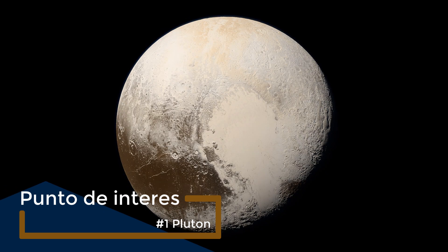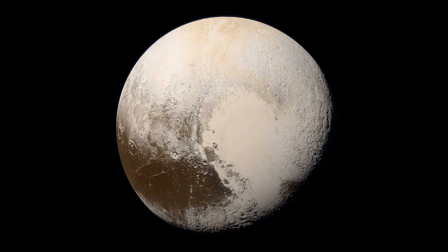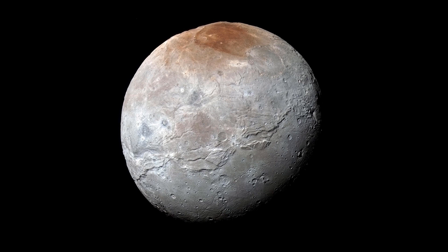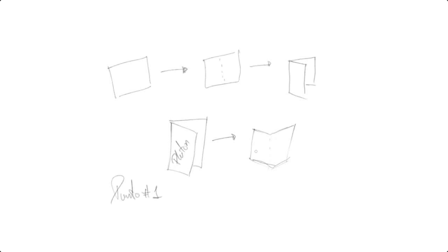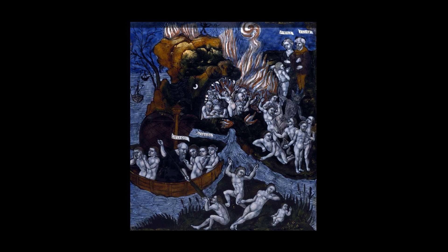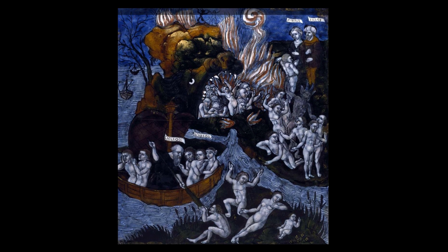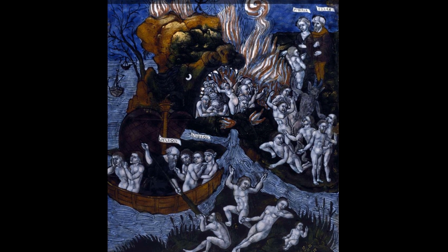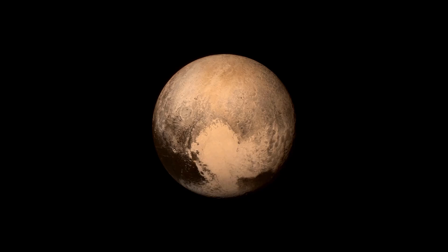Pasaremos a nuestro primer punto de interés, llamado Plutón, y nuestra exploración a Caronte. El mismo ejercicio en nuestro cuadrito de papel: Plutón, y en el interior, Caronte. Caronte lleva su nombre en honor al mitológico barquero que llevaba almas a través del río Acherón, uno de los cinco ríos míticos que rodeaban el inframundo de Plutón. Fue descubierta hace 40 años en el Observatorio Naval de Estados Unidos en Flagstaff, Arizona, mientras los astrónomos trataban de refinar la órbita de Plutón alrededor del Sol.